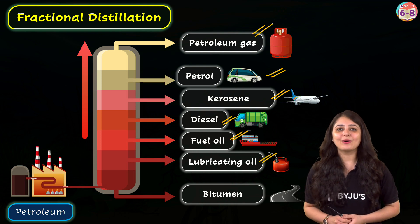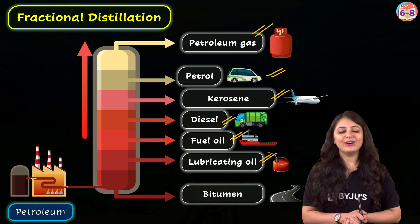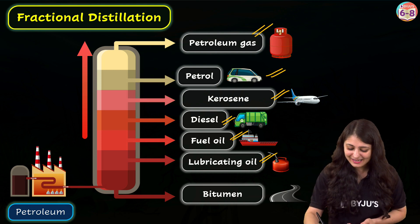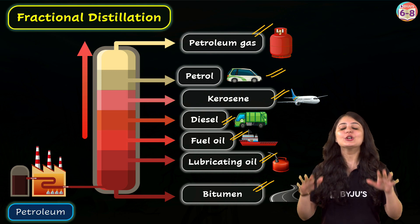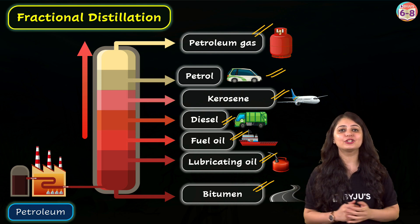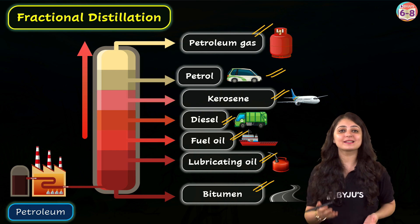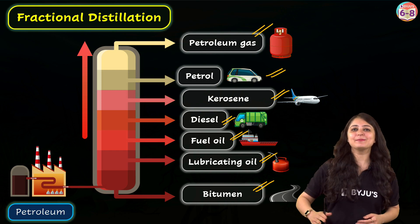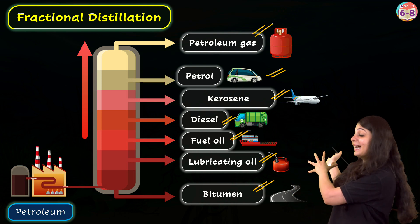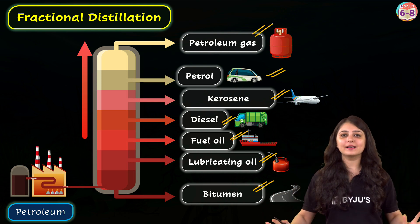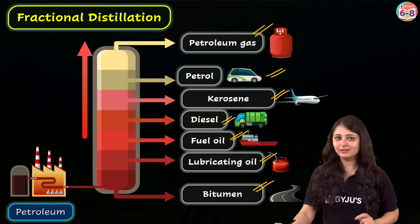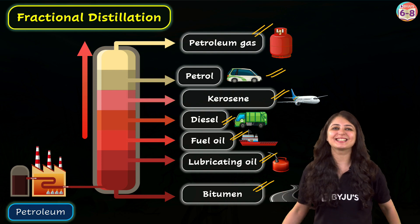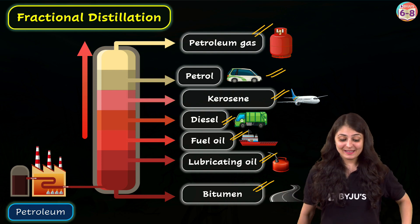Lubricating oil is used for lubrication. Bitumen is used in paints and road surfacing. So many essential products come from petroleum! The next time you fill up your car's gas tank or use any plastic product, remember that they all started as part of this fascinating process of fractional distillation.